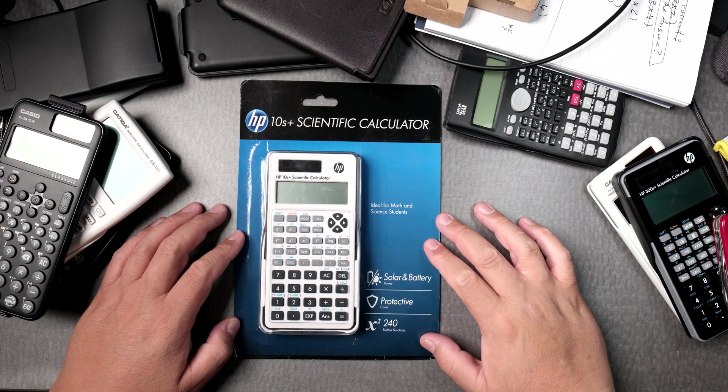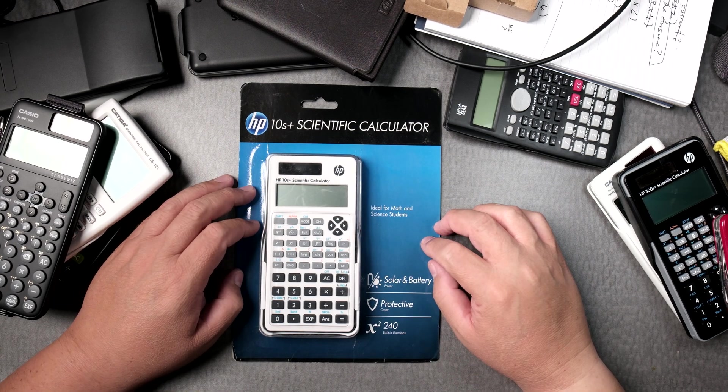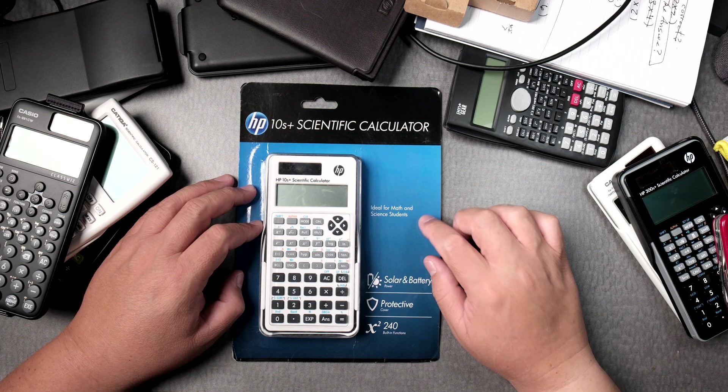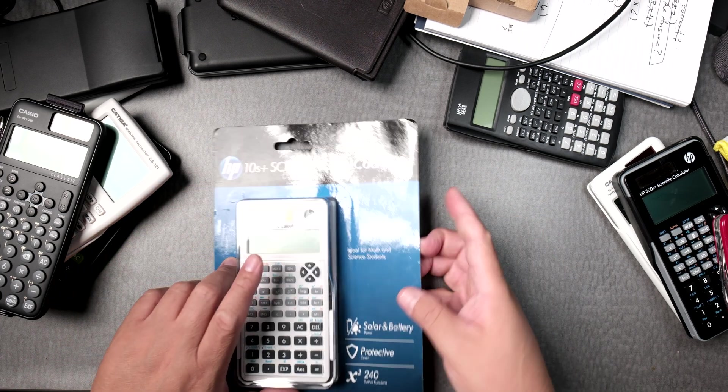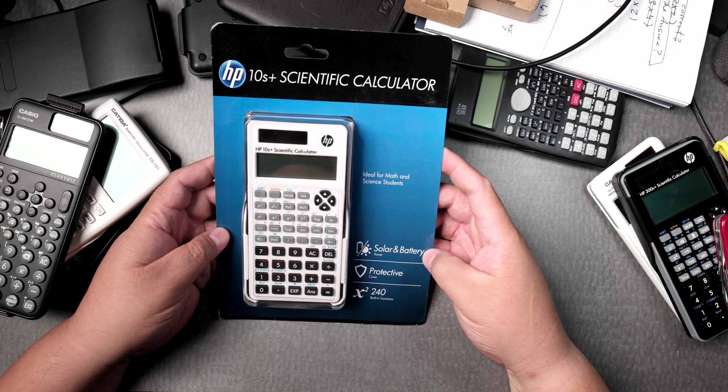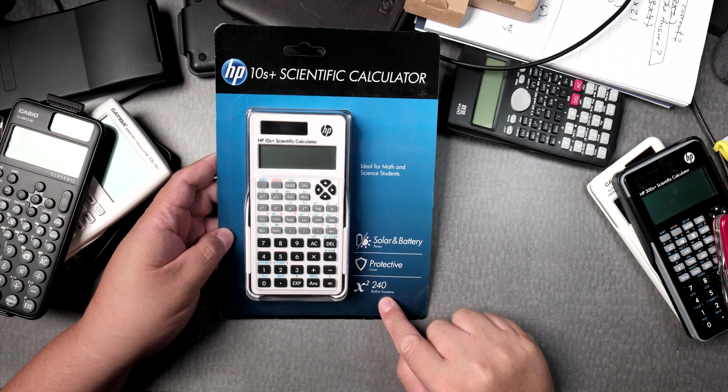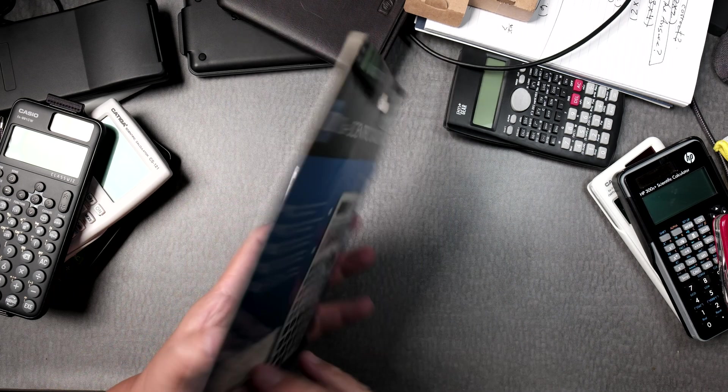This is the unboxing of the HP 10S Plus Scientific Calculator. Here you have, it says it's solar and battery, protective cover, 240 built-in functions.